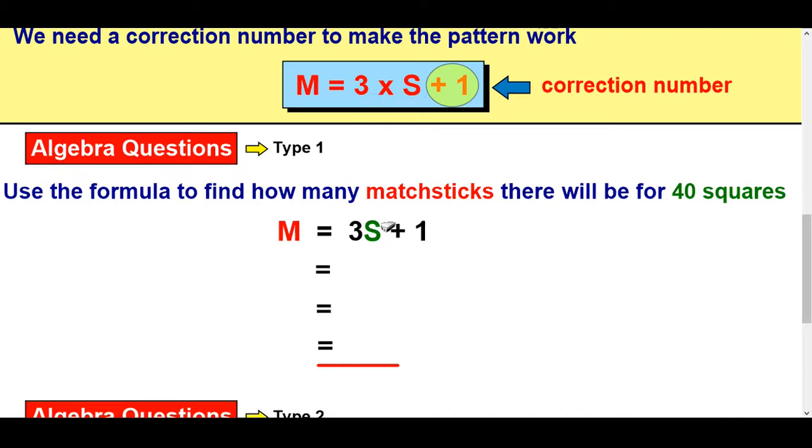Instead of writing three times S, we know from algebra that when you've got stuff next to each other, that's a multiply. So let's answer these two types of questions. Use the formula to find how many matchsticks there will be for 40 squares.